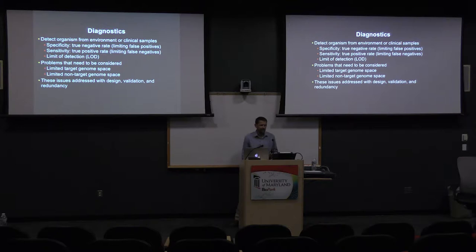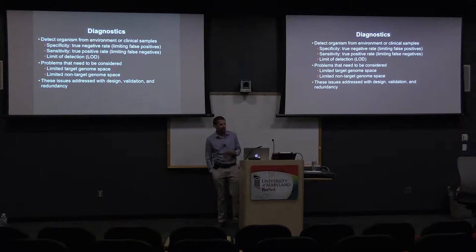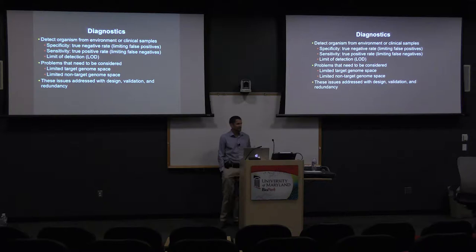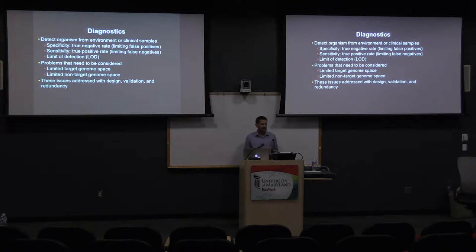In diagnostics, we're really talking about three main categories. The first is specificity — when we don't detect an organism, how well can we do that? This is about limiting false positives. In the select agent world, false positives are a real problem. We also think about sensitivity, limiting false negatives — making sure we're getting the organism we're targeting and not something else. And then limit of detection: in clinical and environmental samples, how low a concentration of our target can we still detect?